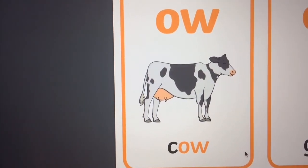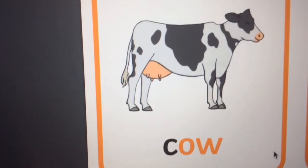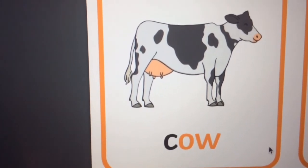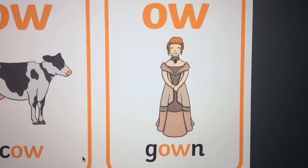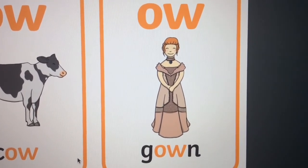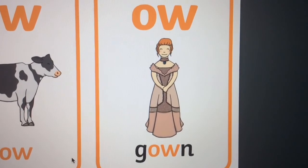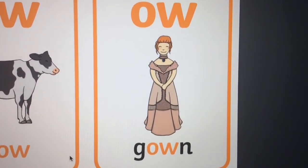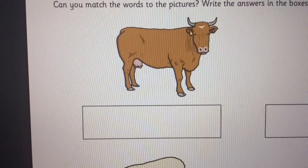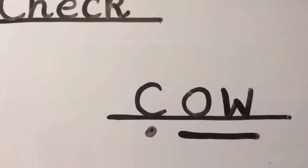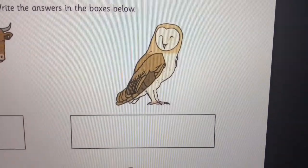Now we're going to have a go at reading some words with the OW digraph in. Let's have a go at reading this one together. Our turn. Your turn — try reading this word with the OW digraph in. Pause the video here and have a go at reading the word. Play the video when you're ready for your check. Ready for your check? Your turn everybody — can you write the word cow? Your turn again — now can you write the word owl?